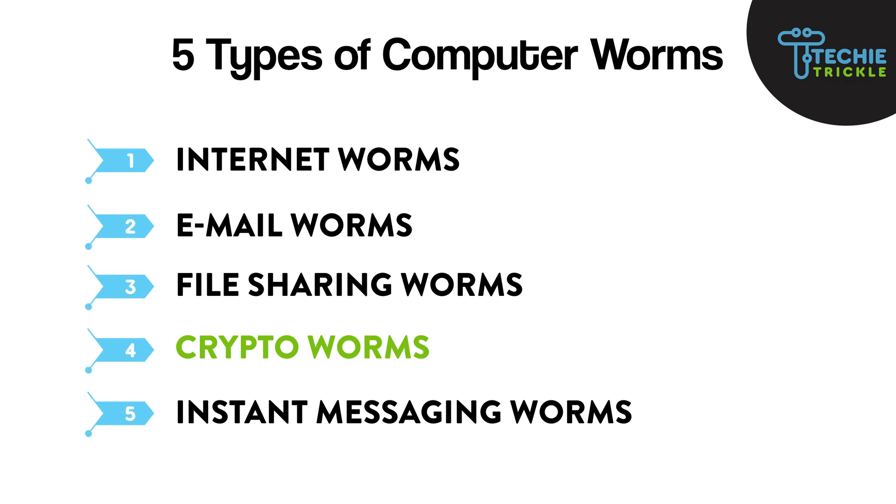The third type is file-sharing worms. The worm copies itself onto a shared folder or drive. When other users on that network access any information from that shared folder, the worm replicates into their systems as well — so all users accessing that shared folder or drive will get infected.